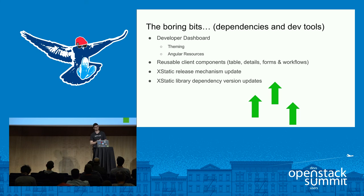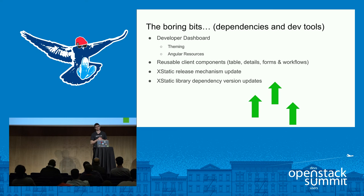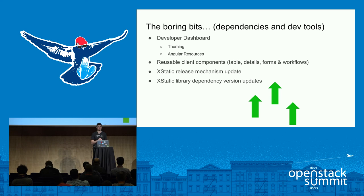We've also made a concerted effort to keep on top of our XStatic dependencies, which is how we package most third-party static assets. Over the past release cycle we spent significant time adding a new release mechanism to fit well with the rest of OpenStack, and we've brought many dependencies up to date with their latest stable releases so that we don't have CSS and JS dependencies lagging months or years behind.